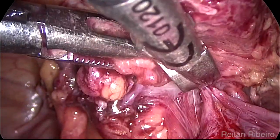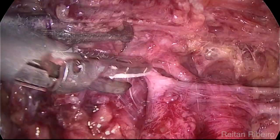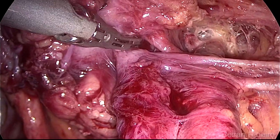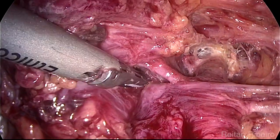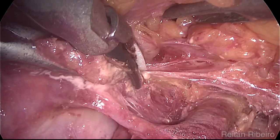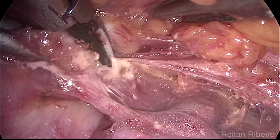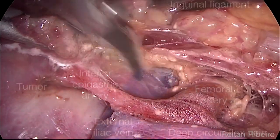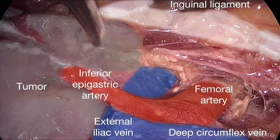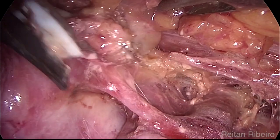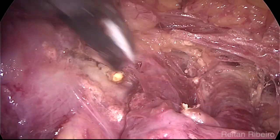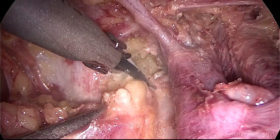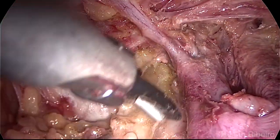A combination of energy sources is very useful in this setting. As the inferior epigastric artery is compromised by the tumor, it is identified, dissected, sealed, and cut-ligated. This marks the distal limit of the pelvic dissection, and this is the final aspect of the right distal limit.